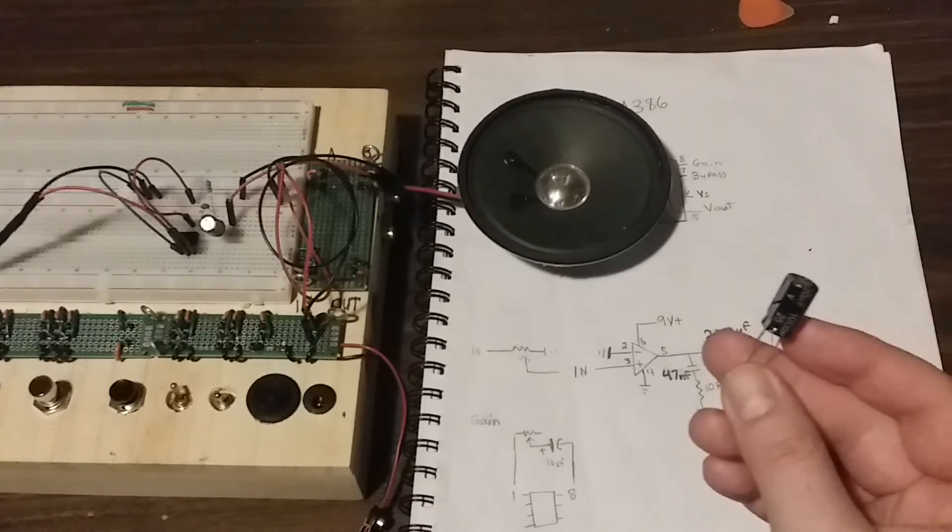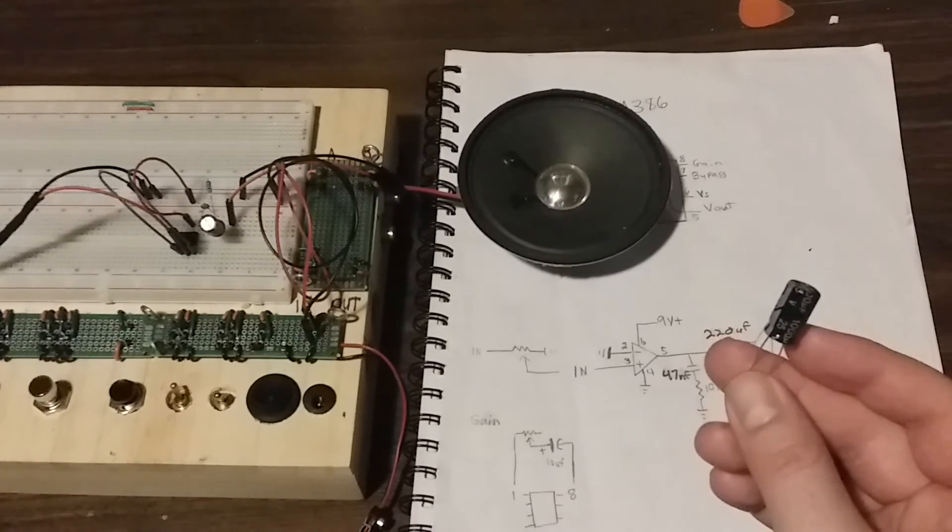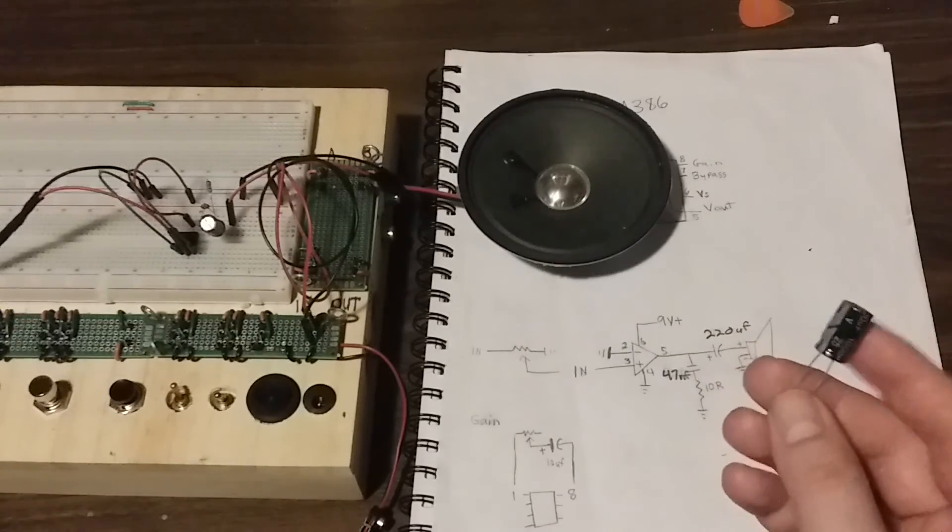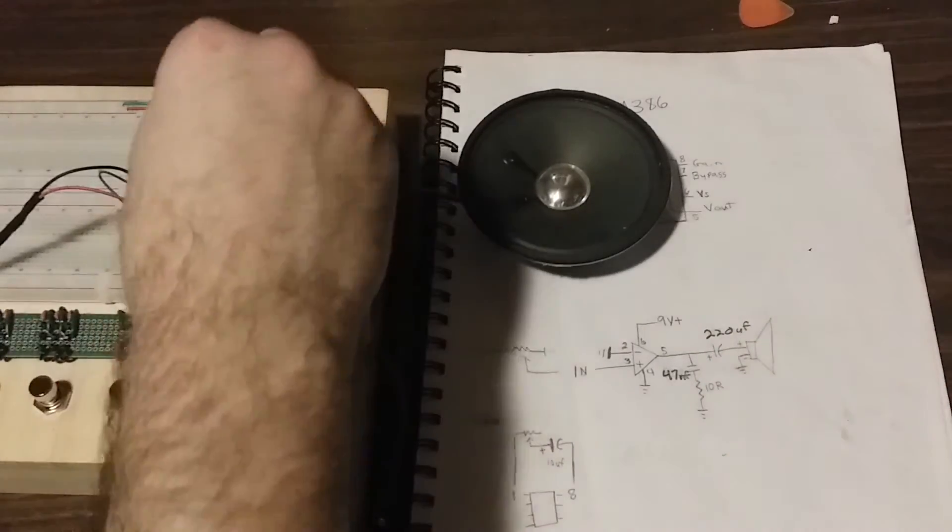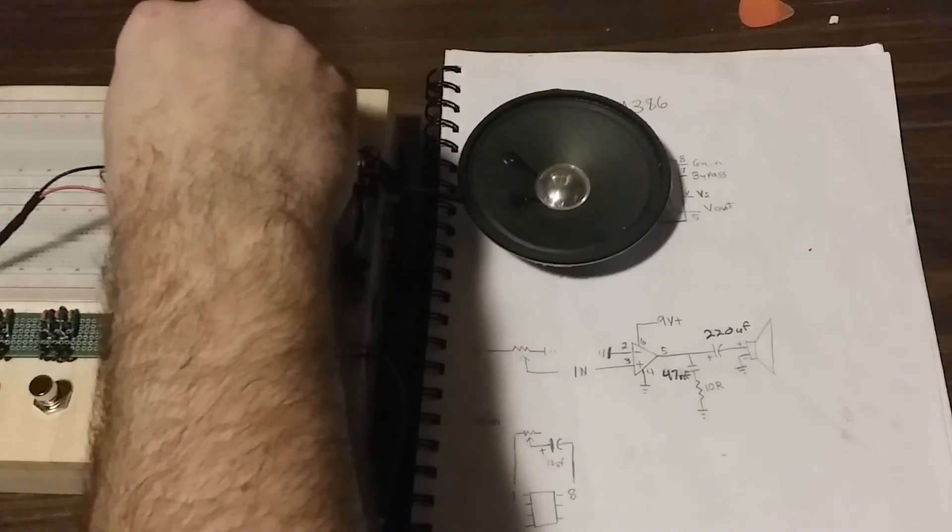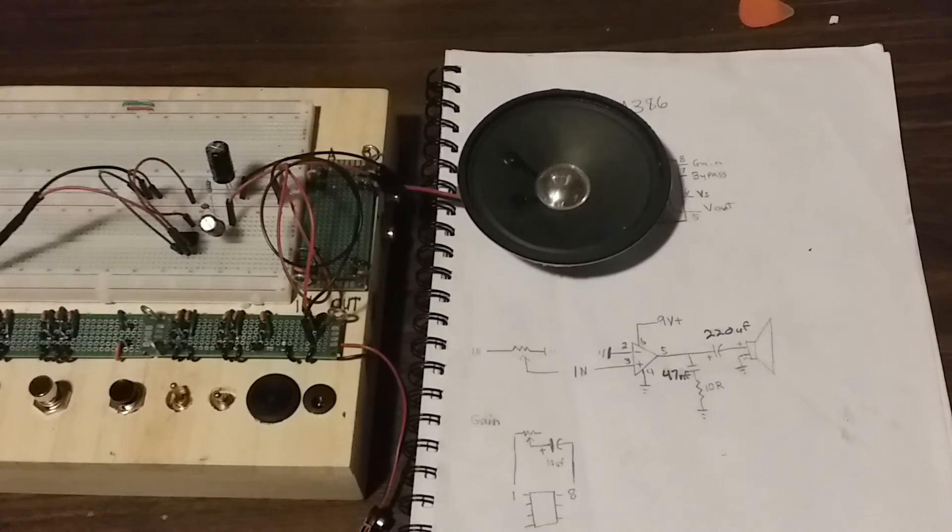So what I'm going to do is I'm going to jump this 1000 UF capacitor from the positive to the negative on my power rail. This will help filter out some of the unwanted sounds coming from the power supply.